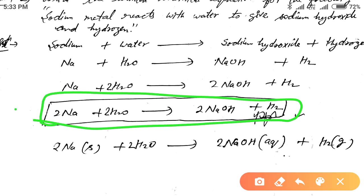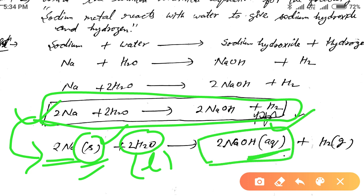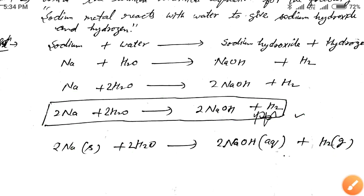Now we make the balanced equation more informative by adding the states of the substances. Sodium is in the solid state, written as (s). Water is in the liquid form, written as (l). Sodium hydroxide is in the aqueous form, written as (aq), and hydrogen is in the gaseous form, written as (g).